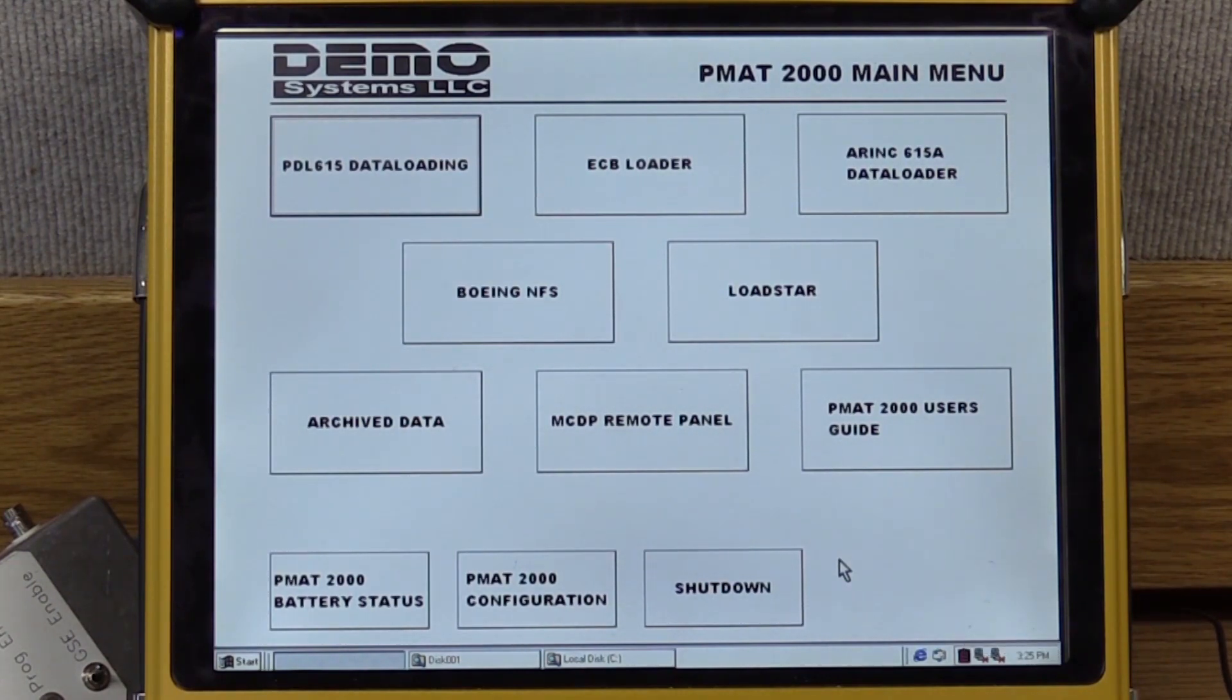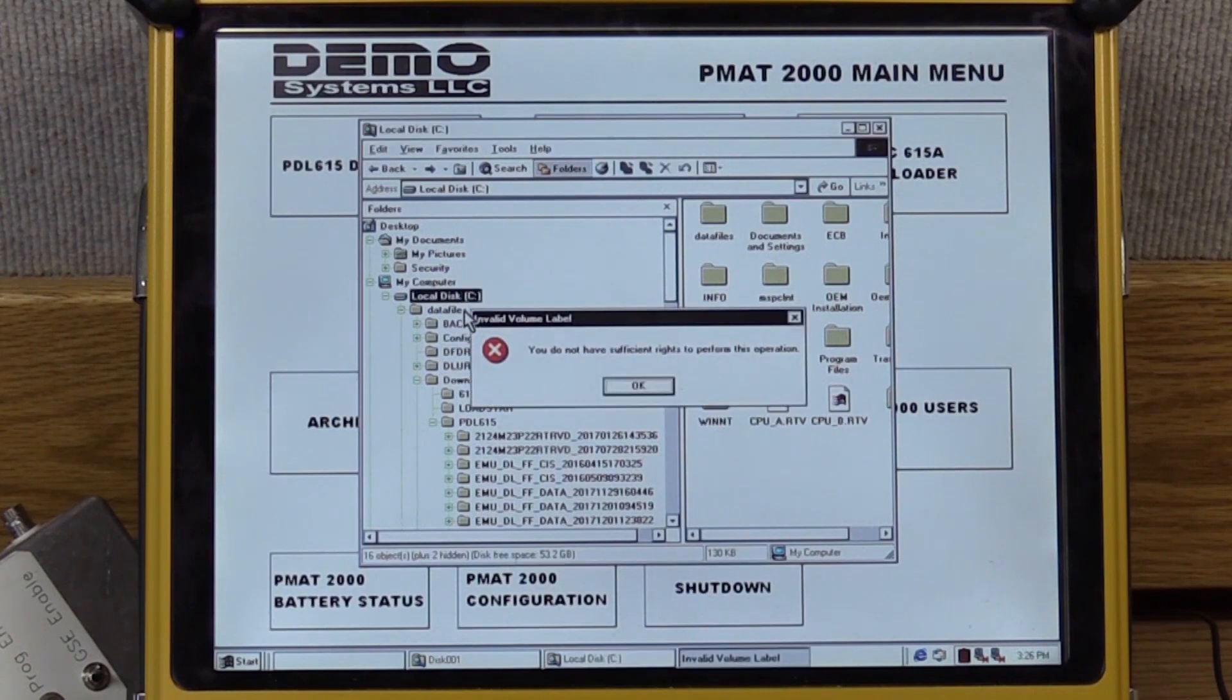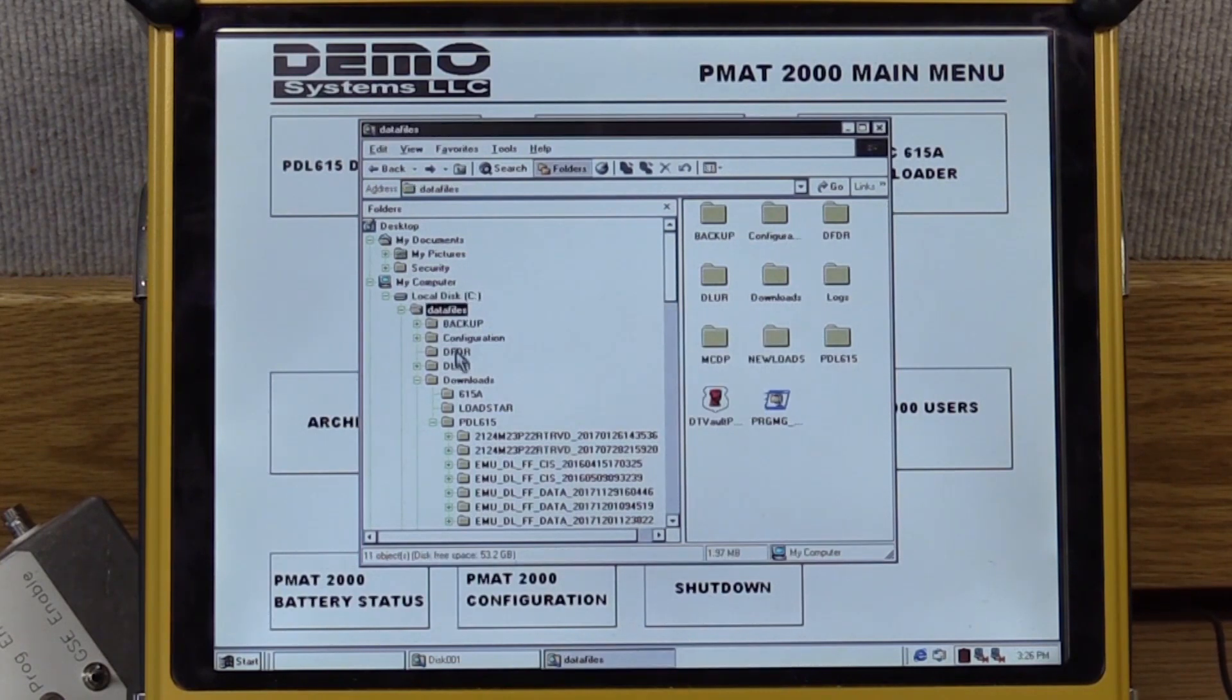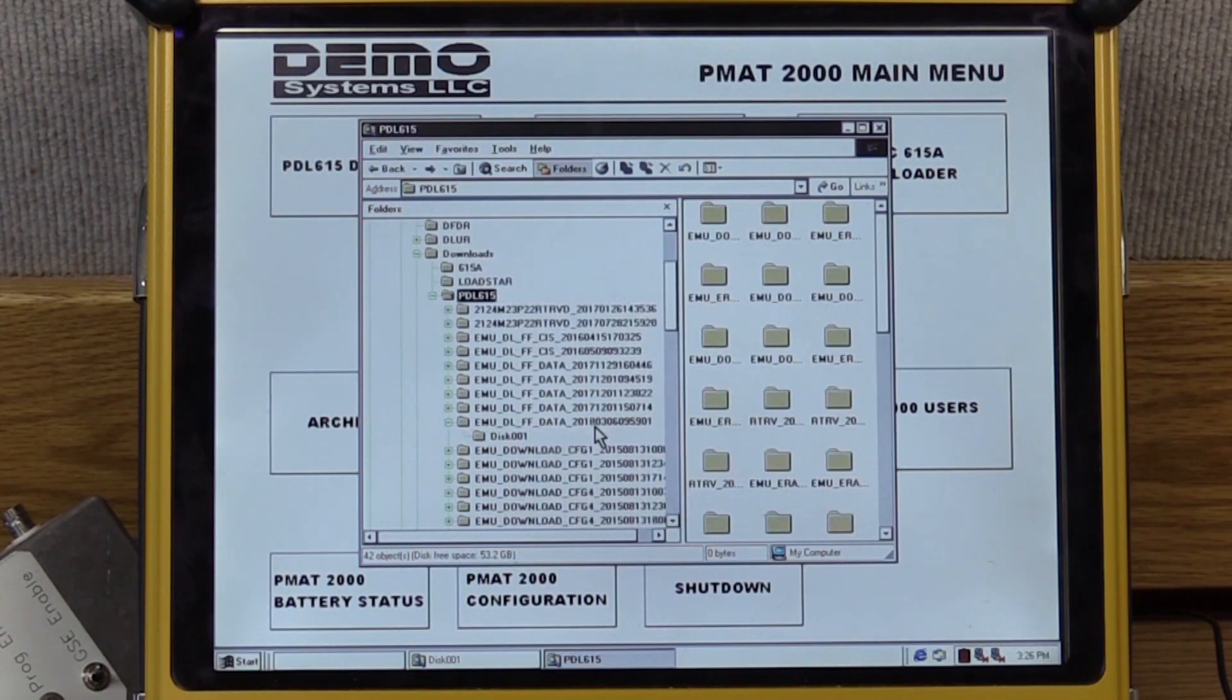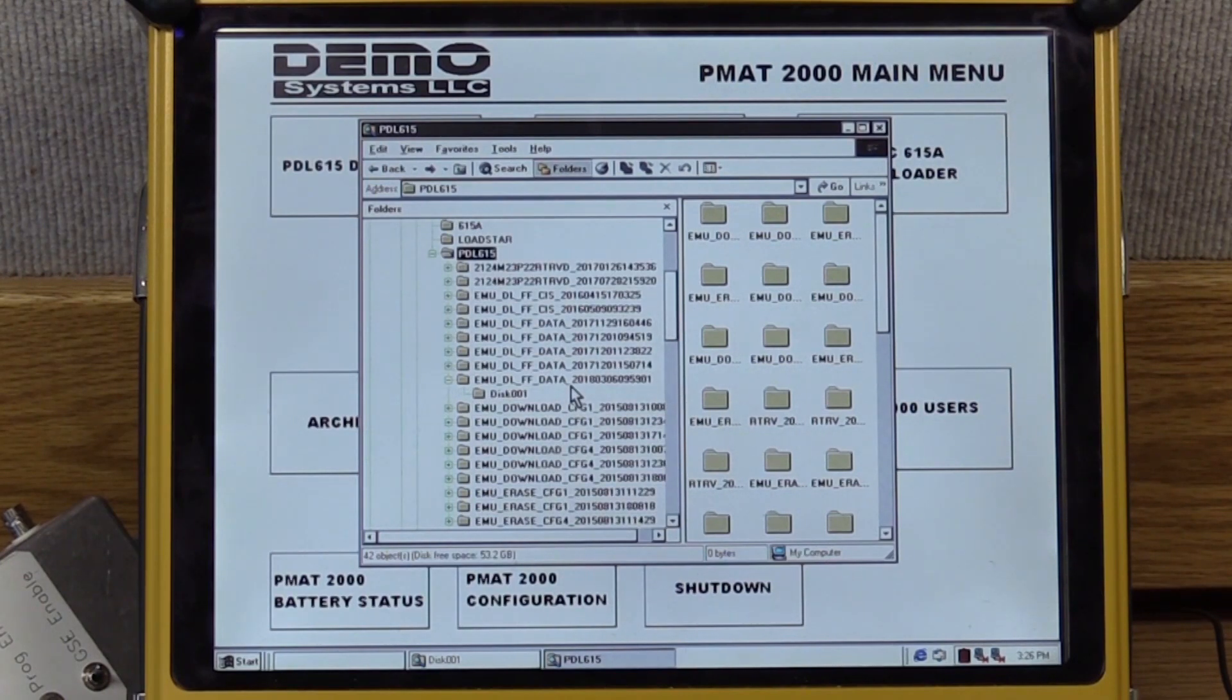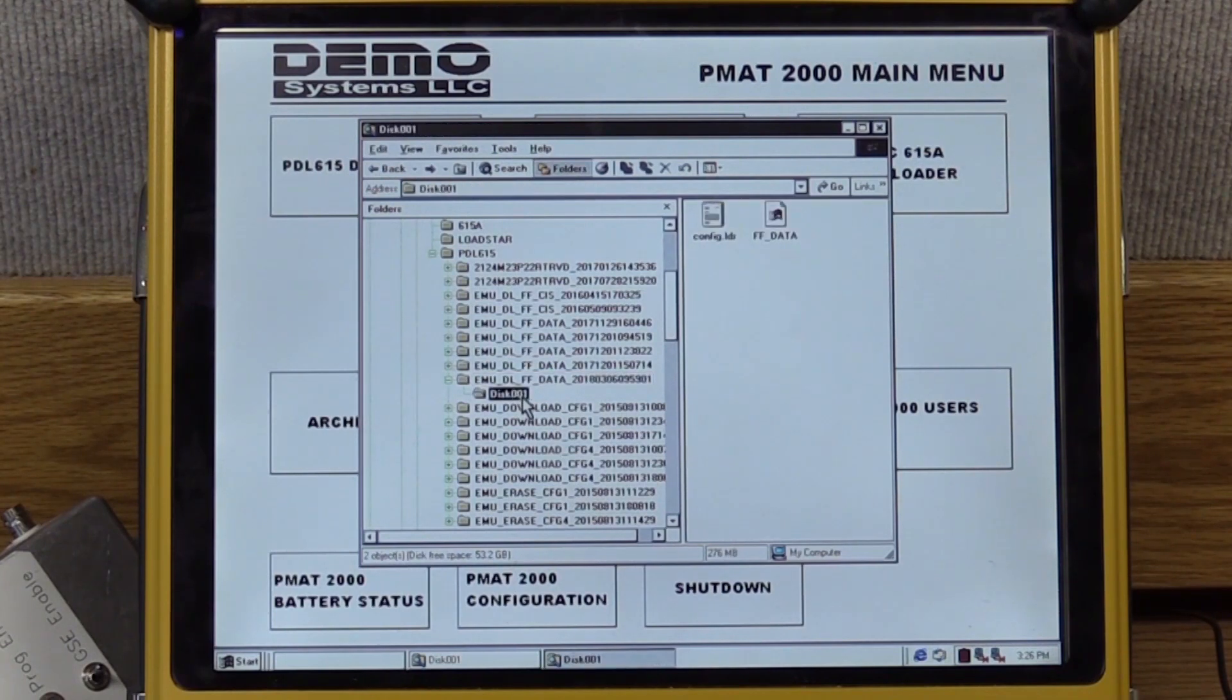Then to retrieve the data you need to go to memory location C drive, data files, downloads, PDL615. Within PDL615 there will be a folder named EMU DLFF data with the date and time stamp. Inside of that folder you'll see disk 001 folder and then you'll have the FF data file. This is the CEOD file from the engine monitoring unit.